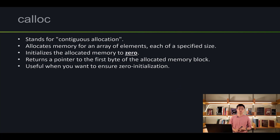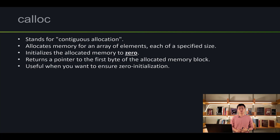Let's talk about calloc. Calloc means contiguous allocation, and it allocates memory for an array of elements, each of a specified size — it does the same thing as malloc. However, the key difference is: in malloc the blocks are initialized to garbage values, but in calloc they're initialized to zeros. Similar to malloc, calloc returns a pointer to the very first memory block, and it's very useful when you want everything initialized to zero to start off.